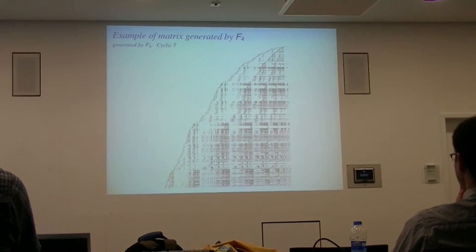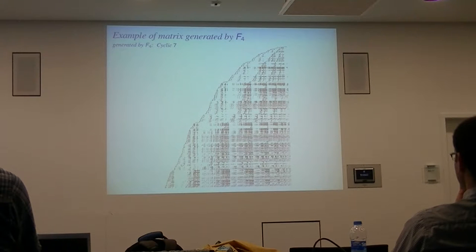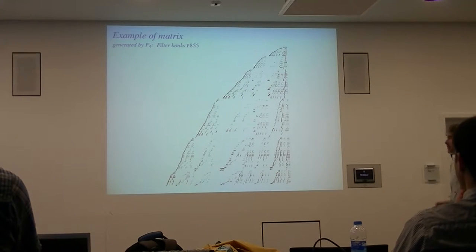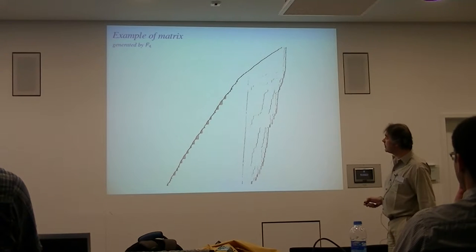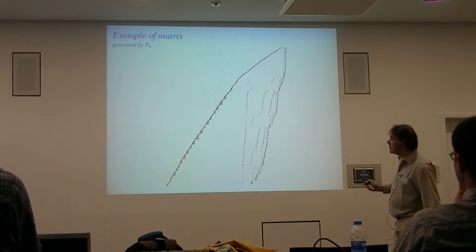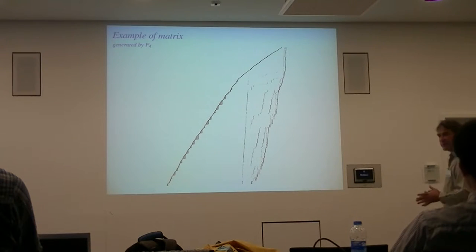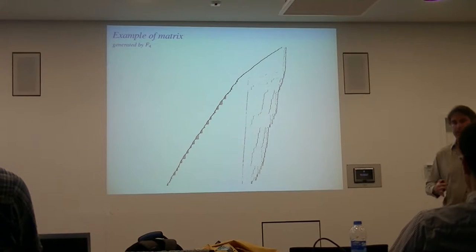Here I show some other examples. Here is an example coming from the cyclic-n problem — the matrix is not so sparse. Here is a problem coming from a signal theory problem — here you see a really sparse matrix. And another signal theory problem — here again you see this structure. The idea was: we are able to build and display these matrices, so we can analyze them and try to propose a dedicated algorithm for this kind of matrix.